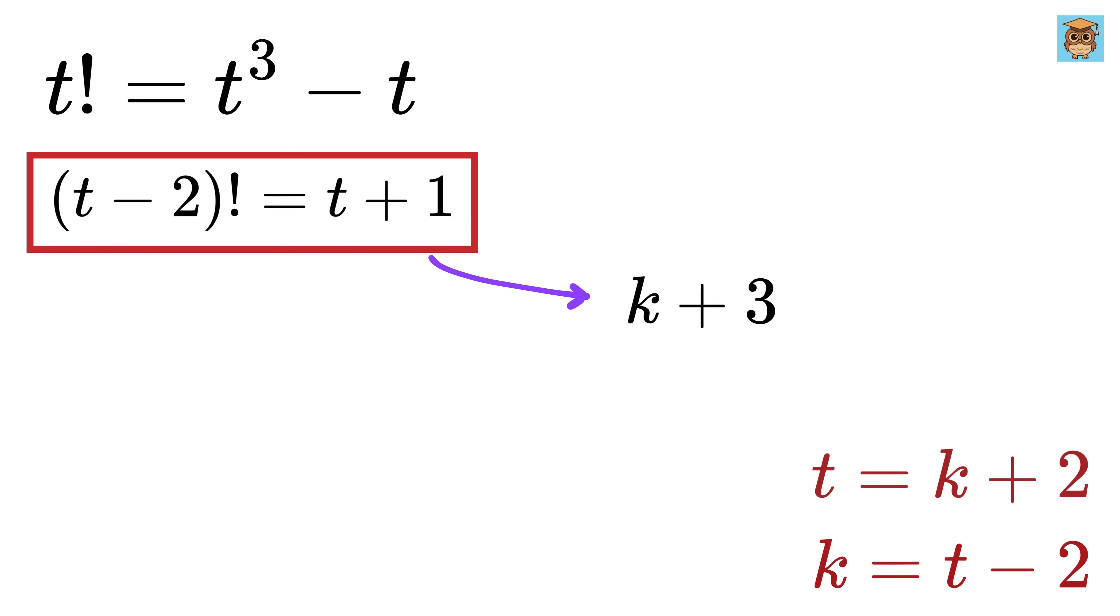Hence, this equation can be rewritten as k factorial equals k plus 3. Now, obviously, this left-hand side is a factorial, which is an integer, and hence k must be an integer.